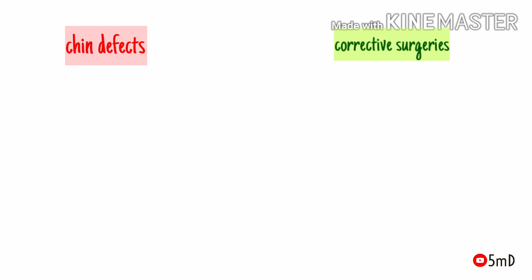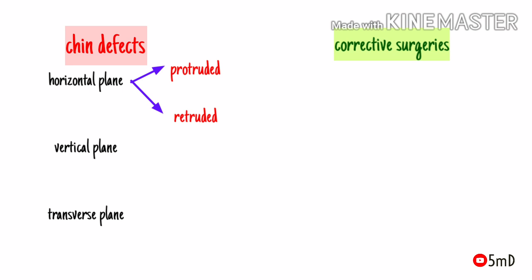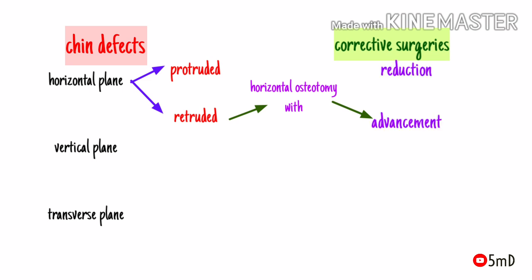What are the common chin defects that could be corrected by genioplasty? The defects could be in all three axes: the horizontal axis, the vertical axis, or the transverse axis. In the horizontal axis, that is the anteroposterior direction, the chin could be either protruded or retruded. When the chin is retruded, horizontal osteotomy with anteroposterior advancement is done; when protruded, horizontal osteotomy with anteroposterior reduction is done.